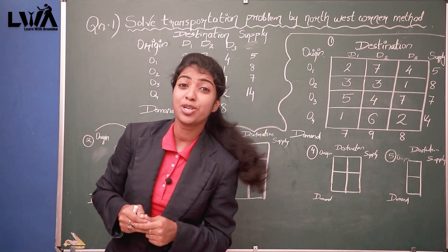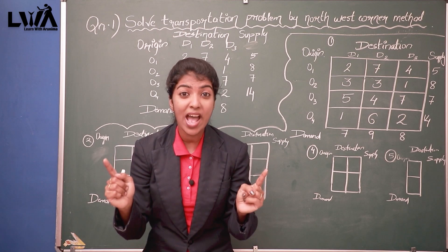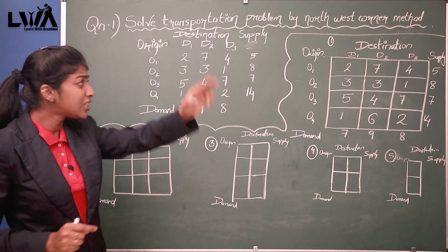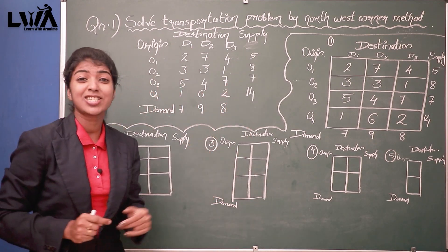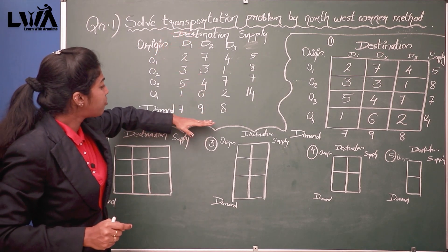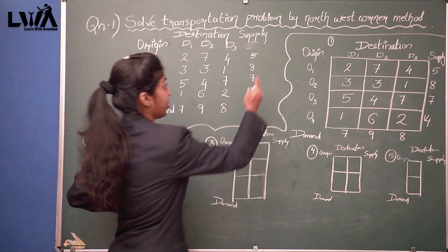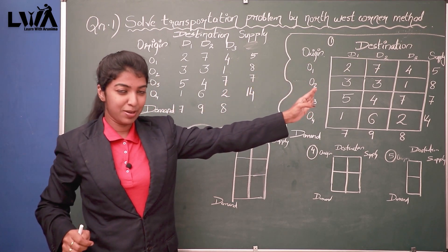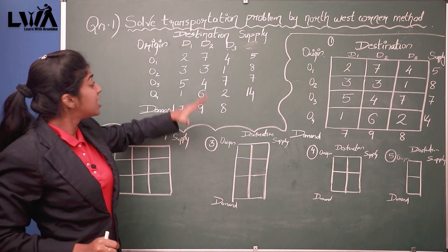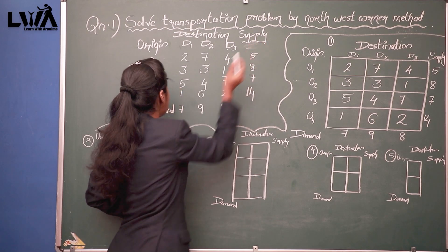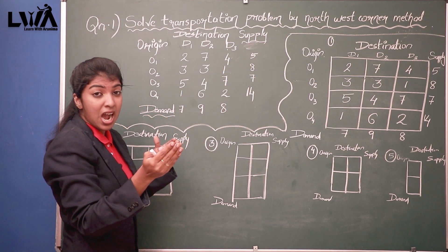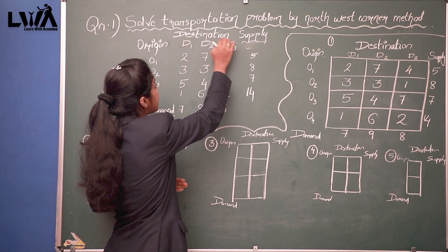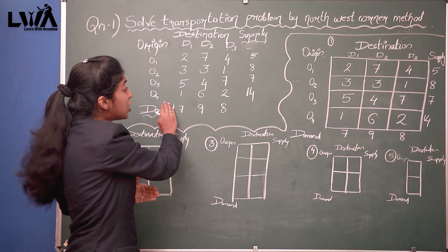The most commonly used one is the North West Corner Rule method, so today we are going to study this transportation problem using the North West Corner Rule. Let's look directly at the problem: solve the transportation problem by North West Corner method. First, look at the supply part and demand part — those are the outer matrix part — and the inner matrix part is the destination and origin.